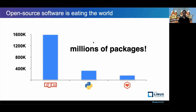Today, open source software is the de facto standard way of building digital apps and services. Modern open source software is actually distributed as packages on package managers. Examples of popular package managers include NPM and PyPI. For example, PyPI hosts over 300,000 Python packages and receives millions of daily downloads.